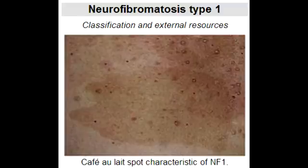Name the mutated gene and its location in neurofibromatosis type 1. In neurofibromatosis type 1, the mutated gene is the NF1 gene and it's located on chromosome 17.